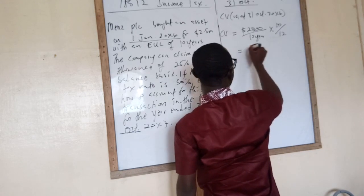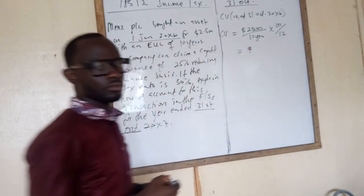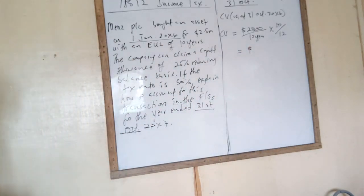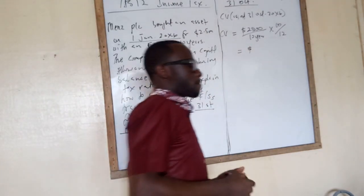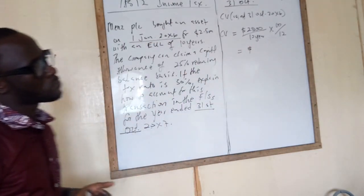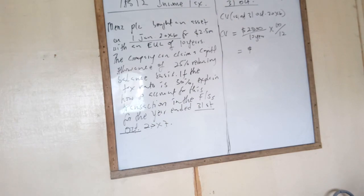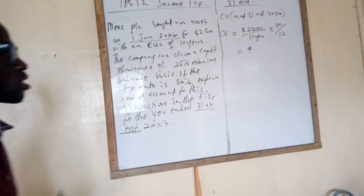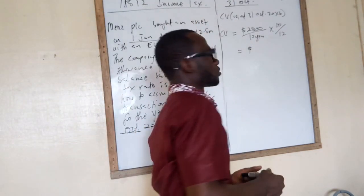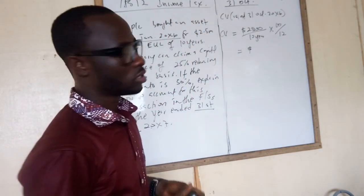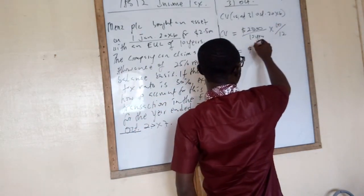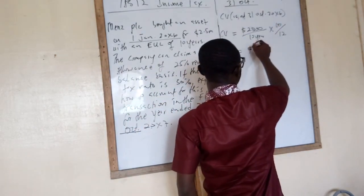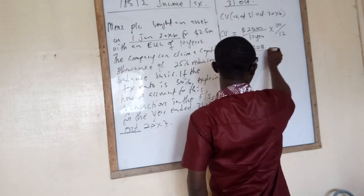What do we have? To the nearest thousand, that gives us $208.